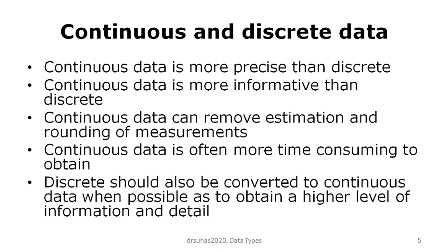For example, height could be expressed as 1 meter or 2 meters, or more precisely as 1.1 feet, 12 inches, or 1 foot 7 inches. In some cases, discrete data can be transformed into continuous data. When we convert data to continuous, more statistical methods and procedures can be applied. So wherever possible, it is better to convert data into continuous data, though in some cases that may not be possible.